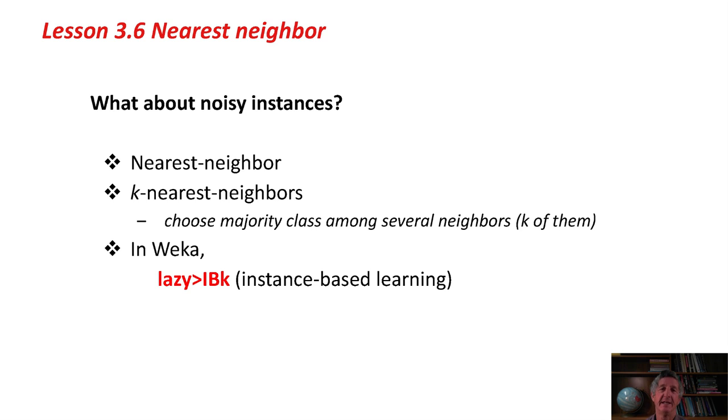What about noisy instances? If we have a noisy data set, then by accident we might find an incorrectly classified training instance as the nearest one to our test instance. You can guard against that by using k nearest neighbors, say 3. k might be 3 or 5, and you look for the 3 or the 5 nearest neighbors and choose the majority class amongst those when classifying an unknown point. That's the k-nearest-neighbor method.